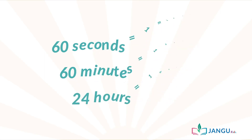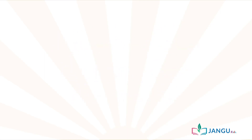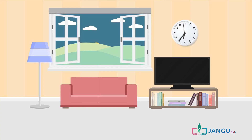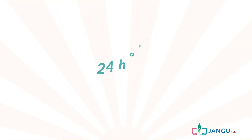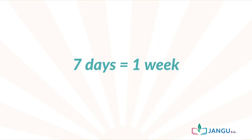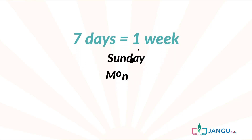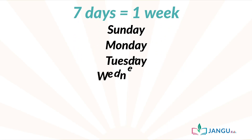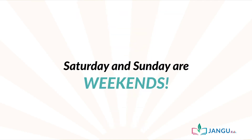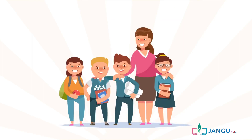24 hours make one day. This means that the time from midnight to morning, to afternoon, to evening and then night again takes 24 hours, and those 24 hours make one whole day. Do you know that there are seven days in one week? They are Sunday, Monday, Tuesday, Wednesday, Thursday, Friday, and Saturday.